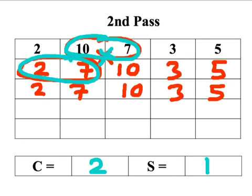At the end of the second pass, the list of numbers I'm working with is: 2, 7, 10, 3, 5.